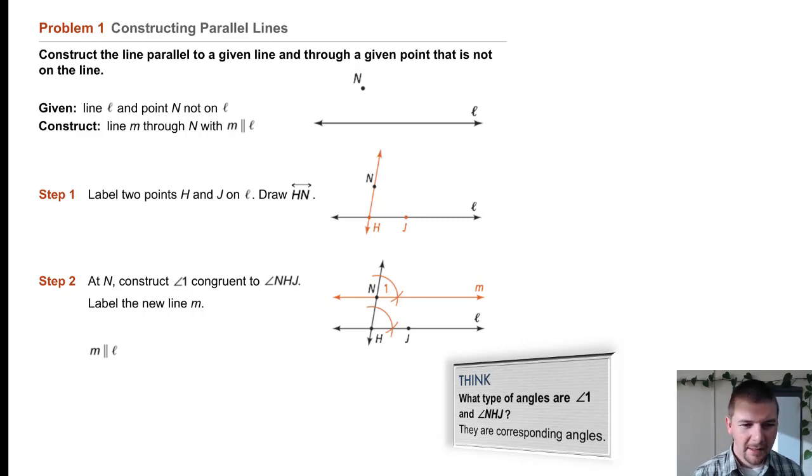Here we're given line L and point N that's clearly not on line L. Our job is to construct M, line M, through the point N with M being parallel to L.